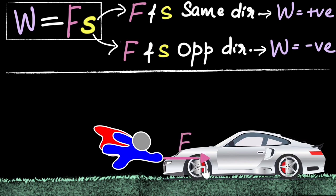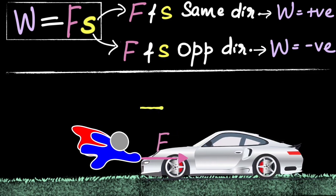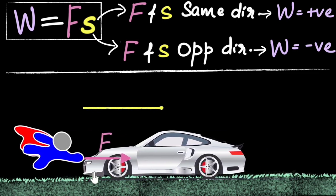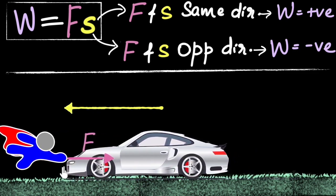But what direction is that car moving? Well, the car is moving to the left. As it's being stopped, notice, the car is moving to the left. So notice, the force on the car is to the right, but it's being displaced to the left. So the force and displacement are in the opposite direction. So over here, Superman did negative work on the car.